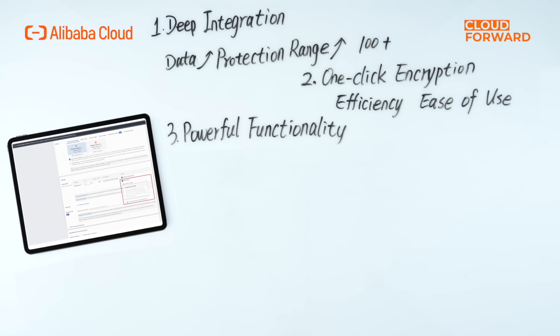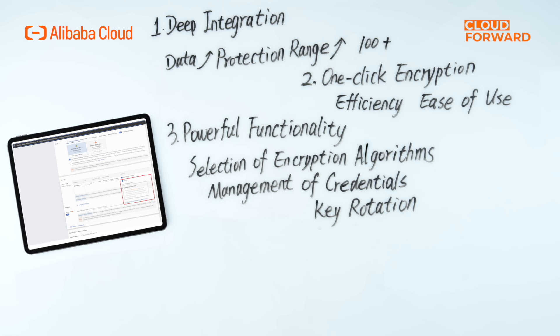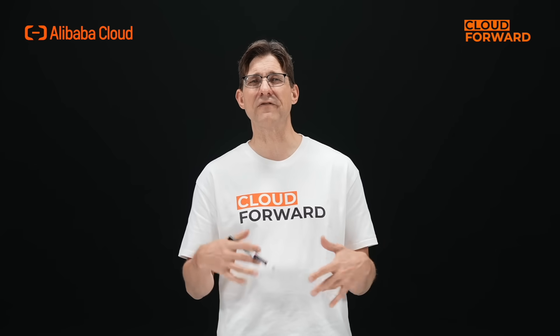Three, powerful functionality. Data encryption is a complex domain. The selection of encryption algorithms, management of credentials, and key rotation are all guarantees for effective encryption. Alibaba Cloud KMS provides customers with complete key lifecycle management, monitors key encryption and decryption calls, conducts security audits, and manages credentials such as database RDS, Redis, ECS passwords, SSH keys, tokens, and sensitive AK data. It supports periodic rotation of passwords, secure distribution, and centralized management capabilities, allowing your applications to avoid risks associated with storing credentials in plain text. Support for key rotation effectively reduces the risk of AK and database credential leak incidents.